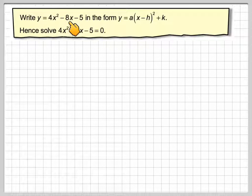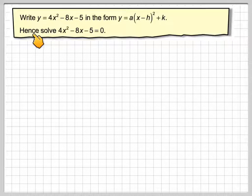Write y equals 4x squared minus 8x minus 5 in the form y equals a times (x minus h) squared plus k. Hence, solve 4x squared minus 8x minus 5 equals 0.